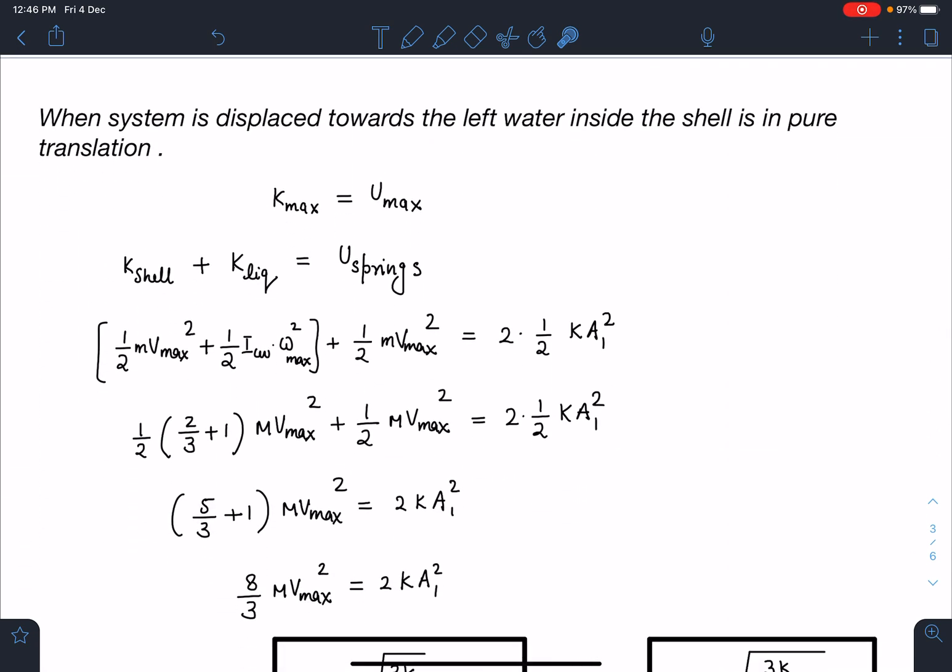When the system is displaced towards left from the mean position, the water inside the shell will be in pure translation. So when I'm writing kinetic energy, I'll write K_max equals U_max. Kinetic energy will be due to the shell and due to the liquid - kinetic energy of the shell and kinetic energy of the liquid in this case.